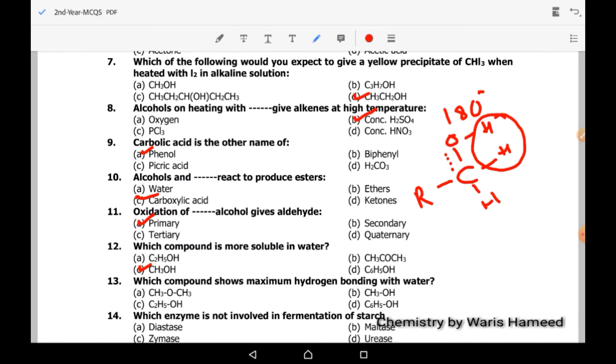In case of MCQ 13, which compound shows maximum hydrogen bonding with water? Again, same scenario. It also depends upon the size of side chain and CH3OH will have maximum hydrogen bonding with water. Which enzyme is not involved in the fermentation of starch? Urease will not be involved in the fermentation of starch.